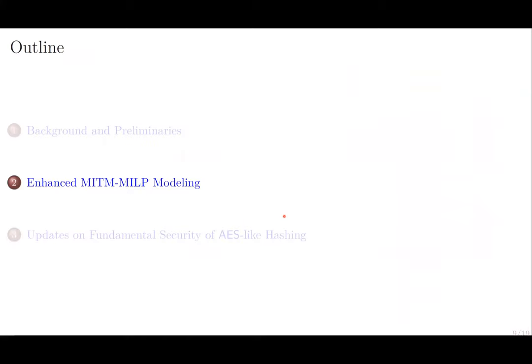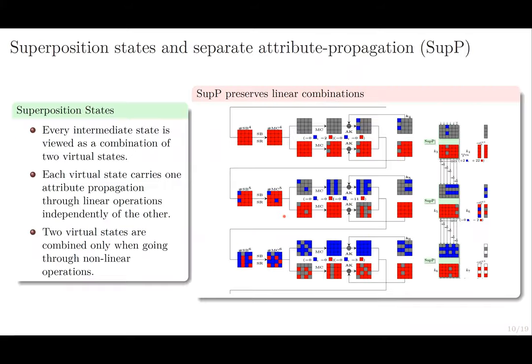In this work, we enhance this Meet-in-the-Middle MILP modeling in several ways. The first point is that, different from the common practice of bit-oriented decomposition of the state, we propose to use the superposition state. That is, every intermediate state is viewed as the combination of two virtual states.